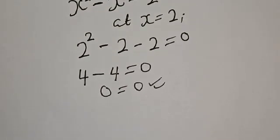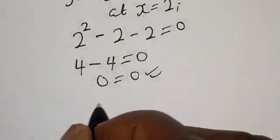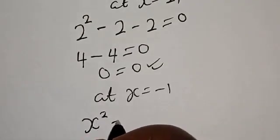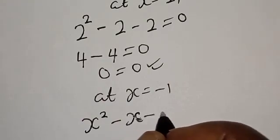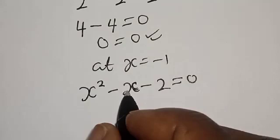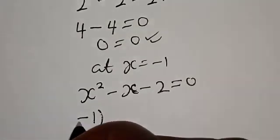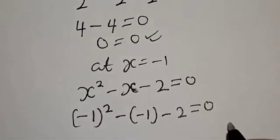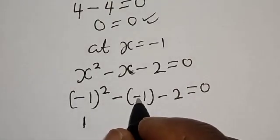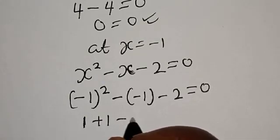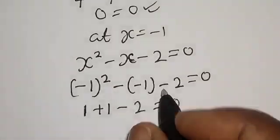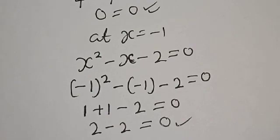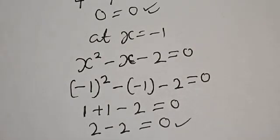Let's check at s equals minus 1. We have s squared minus s minus 2 equals 0. When s is minus 1: (minus 1) squared minus (minus 1) minus 2 equals 0. That gives 1 plus 1 minus 2 equals 0, which is 2 minus 2 equals 0. We satisfy the given equation at s equals minus 1.